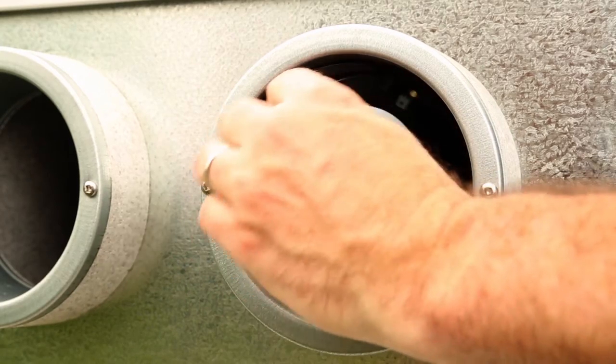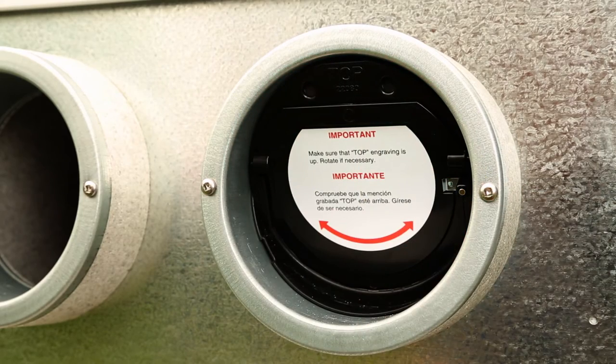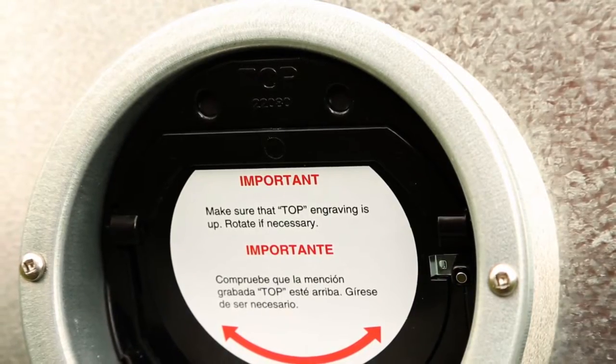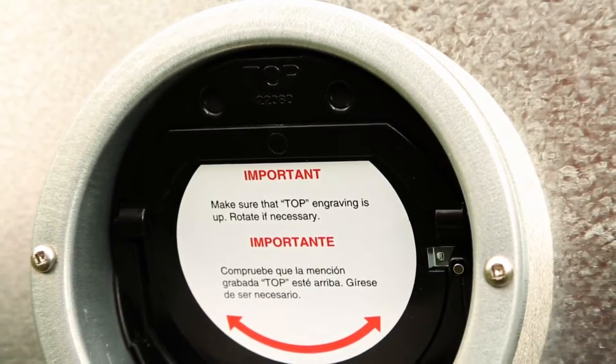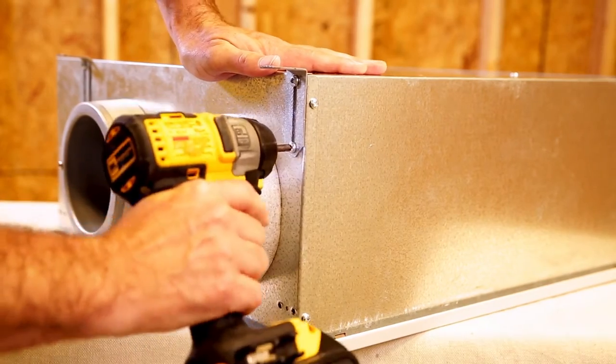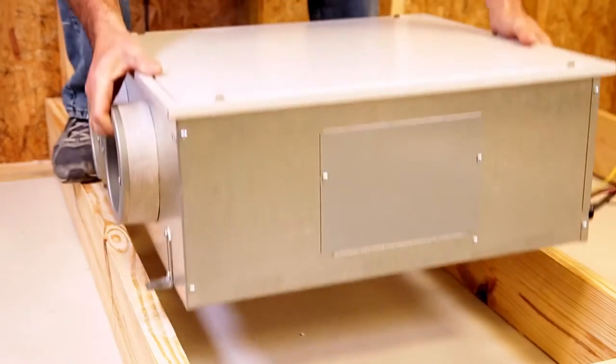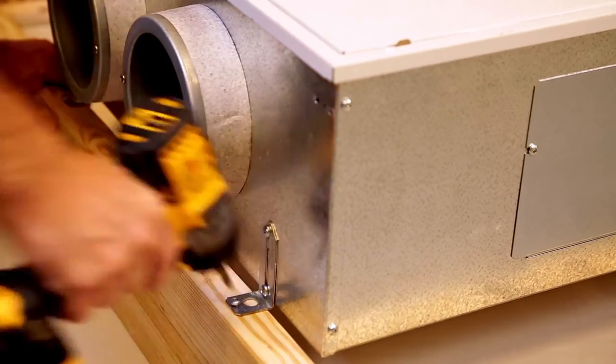To install the ERVS-100 in the attic, first rotate the backdraft damper 180 degrees so that it falls in the closed position and the word top engraved on the damper is facing up at the top. Mount the brackets to the bottom corners of the unit using two number 10 by 5 eighths inch screws per bracket. Secure the unit to the top of the trusses using one number eight by one and a half inch screw for each bracket.